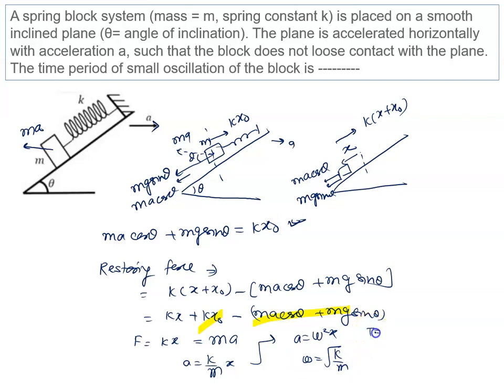Using the formula T = 2 pi divided by omega, and substituting the value of omega, we get the result: T = 2 pi times root(m/k).